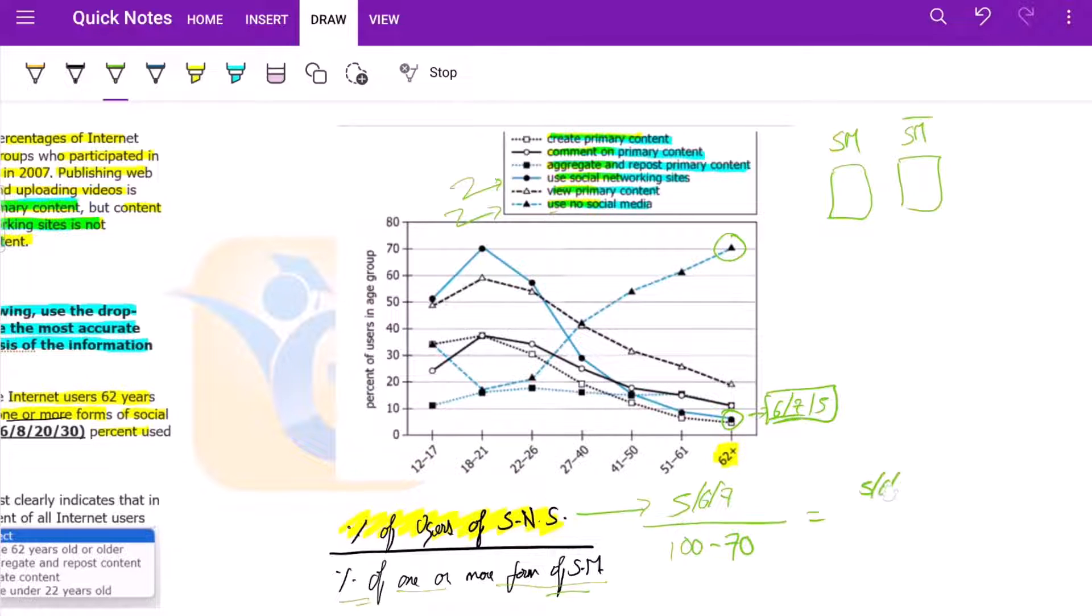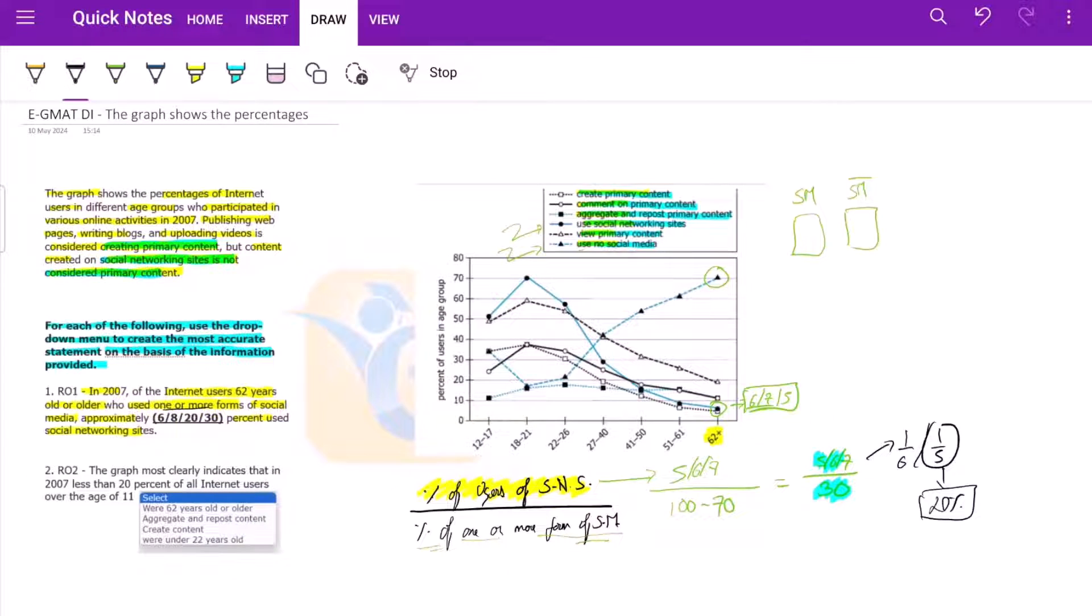So basically one of these digits - five, six, or seven - divided by 30. Six divided by 30 is basically one by five. One by five is 20 percent, so some number around 20 percent.